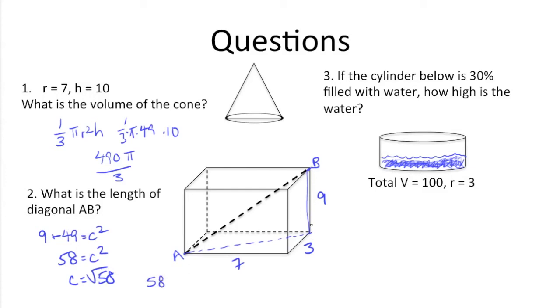b squared is this leg, 9 squared, which is 81, is equal to c squared, which is AB, which is what we're looking for. So 58 plus 81 gets us 139 equals c squared. Take the square root of both sides, and we get the square root of 139.